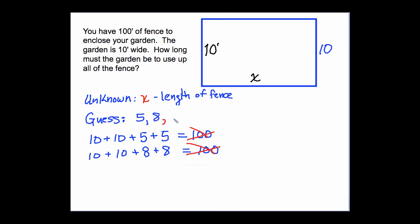Now, we're going to make a guess, and x is going to be our guess. Let's look at what we did. First, we added 10 plus 10, and then we took our guess, x, and we added x and x, and then that had to equal 100.